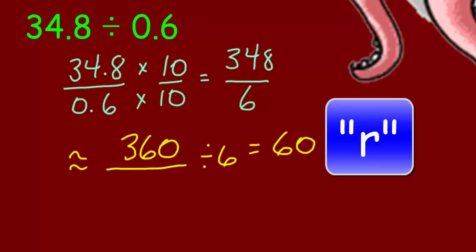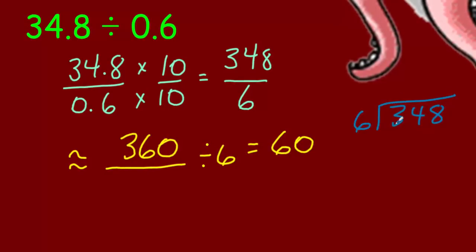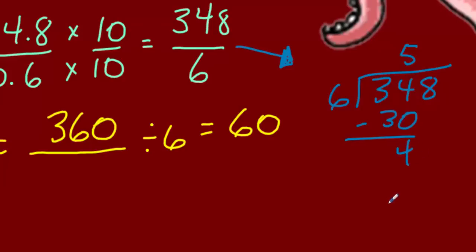Let's go ahead and use the division algorithm to find the actual quotient. Rather than dealing with the decimals right now, I'm going to use that division fraction that we set up and determine the answer as if they were whole numbers. 3 couldn't be divided equally into 6 groups, so we're going to need to go to 340. In that case we can get 5 — that would actually be 50 in each group. That's going to turn out to be 30. We'll subtract that difference, end up with 4. We're going to go ahead and bring that 8 down. Now 6 works out really nicely with 8 because 6 times 8 is 48, and that's where it will end with no remainder.